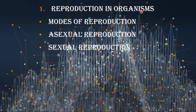In this first lesson, reproduction in organism, we are going to see about the different modes of reproduction, especially the different types of asexual reproduction. Asexual reproduction is common in lower organisms like Protista, bacteria, archaea, and many unicellular organisms and few multicellular organisms. Whereas sexual reproduction occurs in higher organisms where male and female are separate, producing sperm and egg respectively, and by means of fertilization, zygote and embryo form.